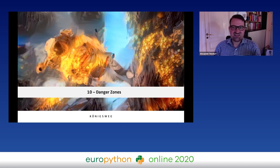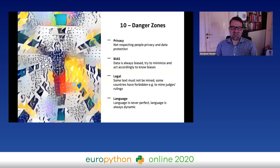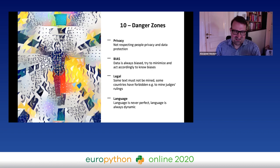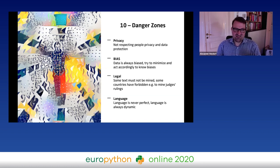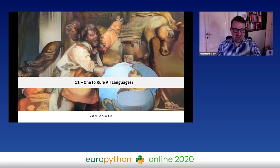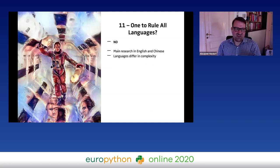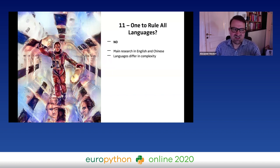Danger zones to consider — not only with spaCy but with everything in data science and NLP: privacy and bias. Always keep in mind that data is always biased — try to minimize it, learn how to work with the bias, and don't just say 'data is the truth.' There might be legal things to consider, and always remember language is never perfect — it's always dynamic. Also, NLP is not equally strong in all languages; it's really strong in English and Chinese, less so in others.